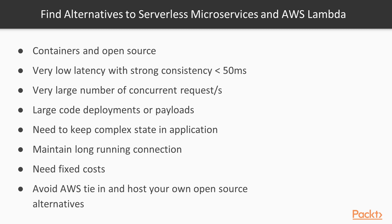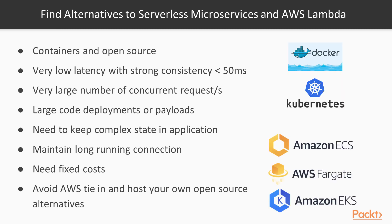If you want to avoid AWS tie-in and host your own open source alternatives, then have your DevOps team host and manage your own infrastructure. In this case, I would look at using Docker containers managed by Kubernetes, or better yet, look at using the managed versions — recently released AWS Fargate or the soon-to-be-released Amazon EKS.